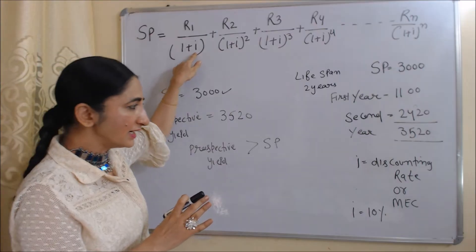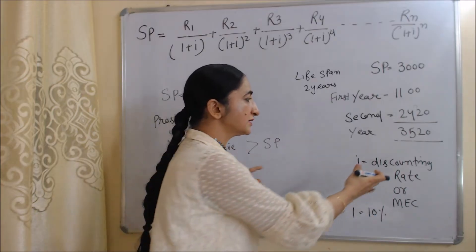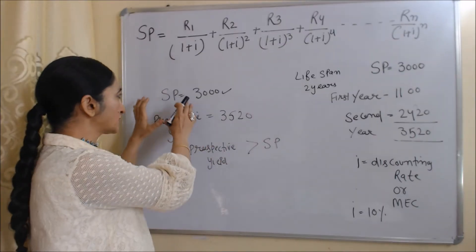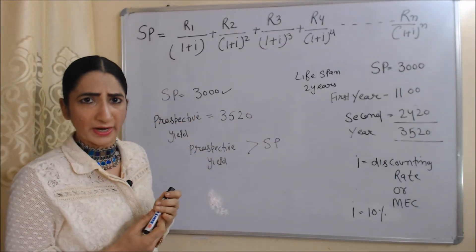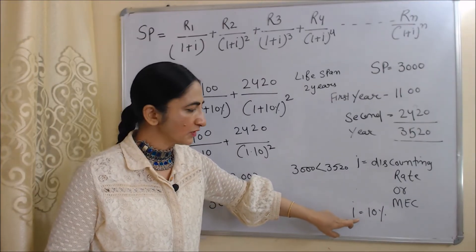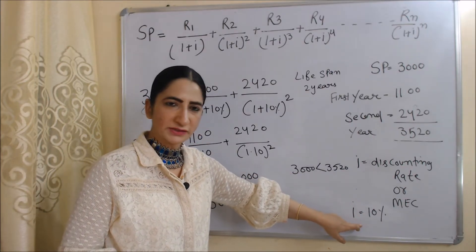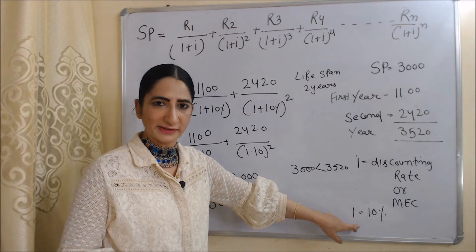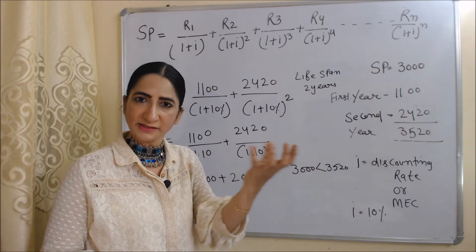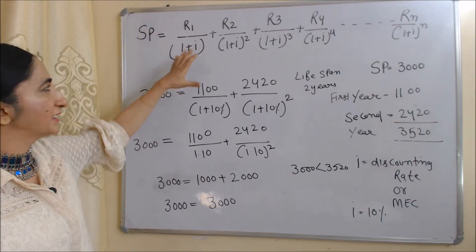So what is 'i' here? 'i' is the discounting rate, or we can say 'i' is the marginal efficiency of capital. We will now see how this discounting rate makes prospective yield just equal to supply price. Here we assume the value of 'i' is 10%, which is our discounting rate or marginal efficiency of capital. We will put the values of all variables into this formula.